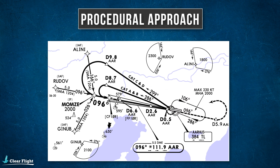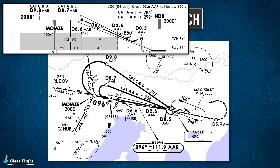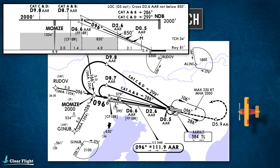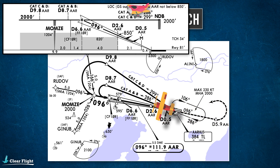Let's bring up the vertical diagram of this approach as well. We'll assume you're tracking to the Tango Lima and arriving within this 60 degree cone at an altitude of 2500 feet. Air traffic control have already cleared you for the ILS procedure, so on reaching the NDB, you'll turn to fly a track of 286 degrees and descend to altitude 2000 feet.